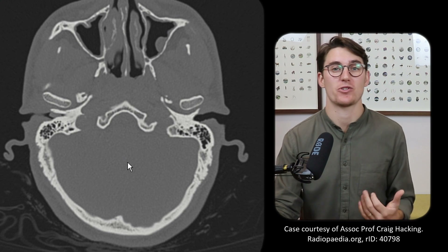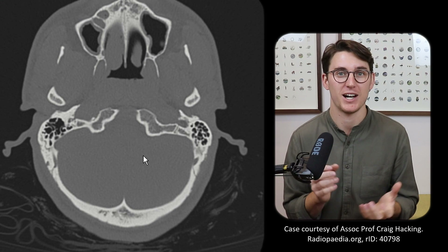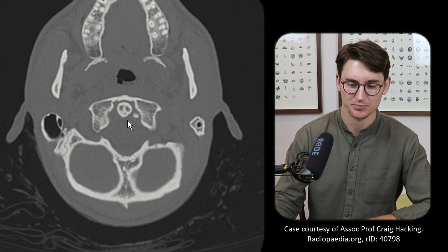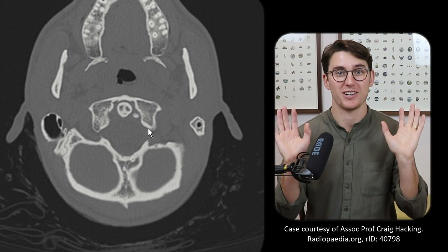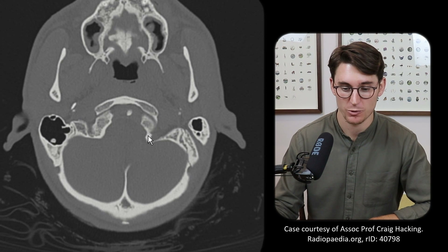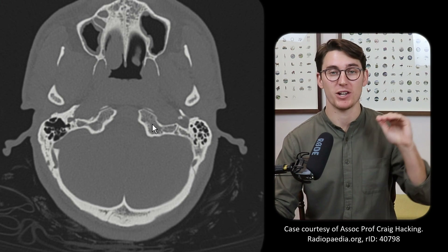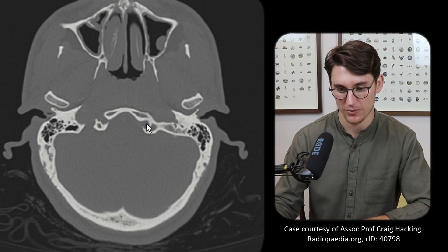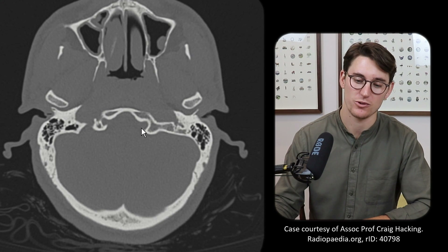Moving on to our last cranial nerve — cranial nerve 12, the hypoglossal nerve. People can find this quite difficult to locate. I find the hypoglossal canal by first looking for the dens — scrolling down to the odontoid process. The surrounding bone is the atlas, our C1. The atlas communicates with the occipital condyles, which is how our skull rests on the cervical spine. Scrolling superiorly, these two processes are our occipital condyles, and the hypoglossal canal runs through them. We can see a canal running through and down — that's our hypoglossal canal, and the hypoglossal nerve passes through it.